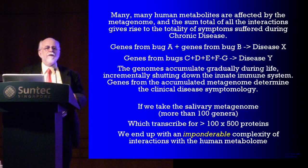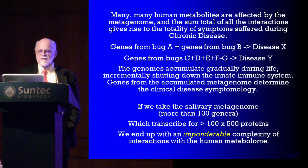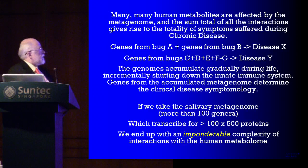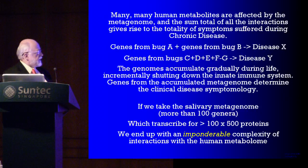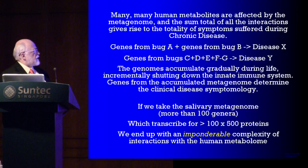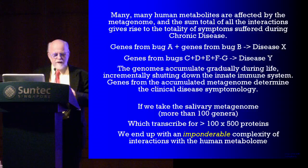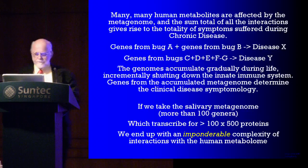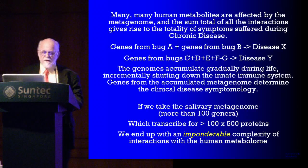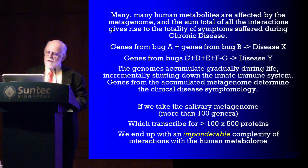Many human metabolites are affected by the metagenome — the persistent pathogens living within pathogenic cells. The sum total of all these interactions gives rise to the totality of symptoms suffered during chronic disease. If a person has genes from bug A and bug B expressing proteins and proteases in the cytoplasm, that might lead to disease X, whereas disease Y might require genes from bugs C, D, E, F with the absence of bug G. This is a totally new concept in medicine. Medicine still works on Koch's postulates — one bug, one disease — but now we understand it's not that. The genomes interact and accumulate gradually during life, the metagenome incrementally shutting down the innate immune system. Genes from the accumulated metagenome determine clinical disease symptomatology.